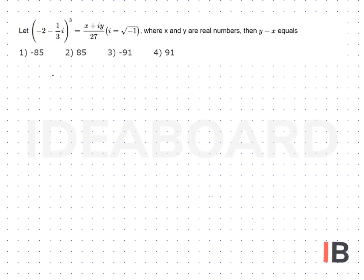Given (-2 - 1/3i)³ = (x + iy)/27. Here, taking the LCM, we get (-6 - i)³ divided by 3³.